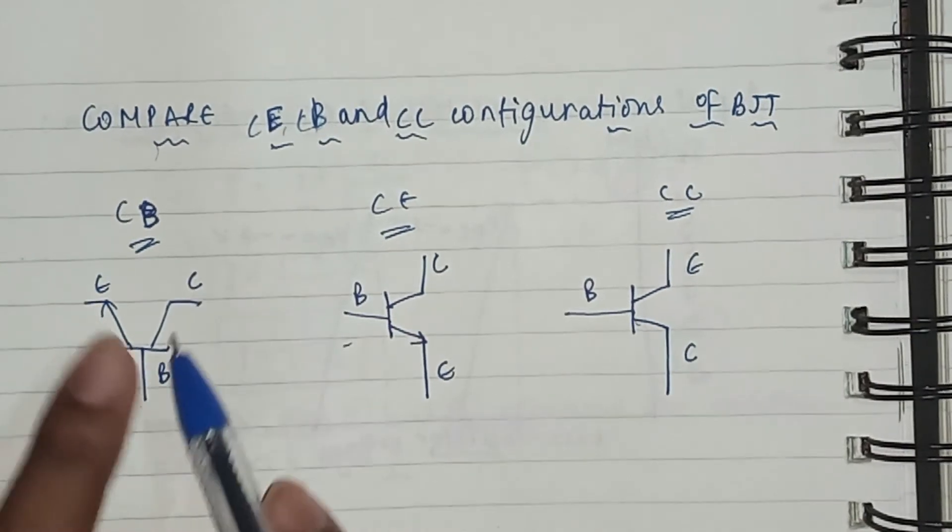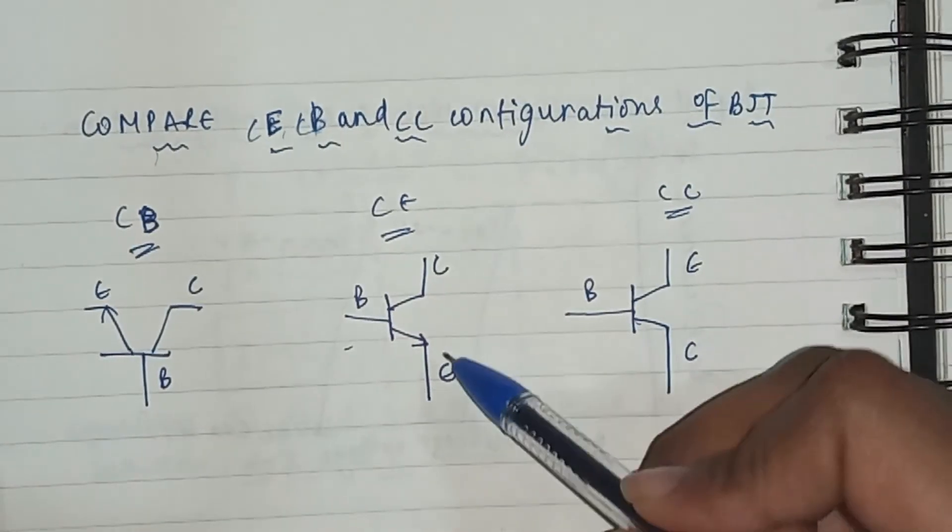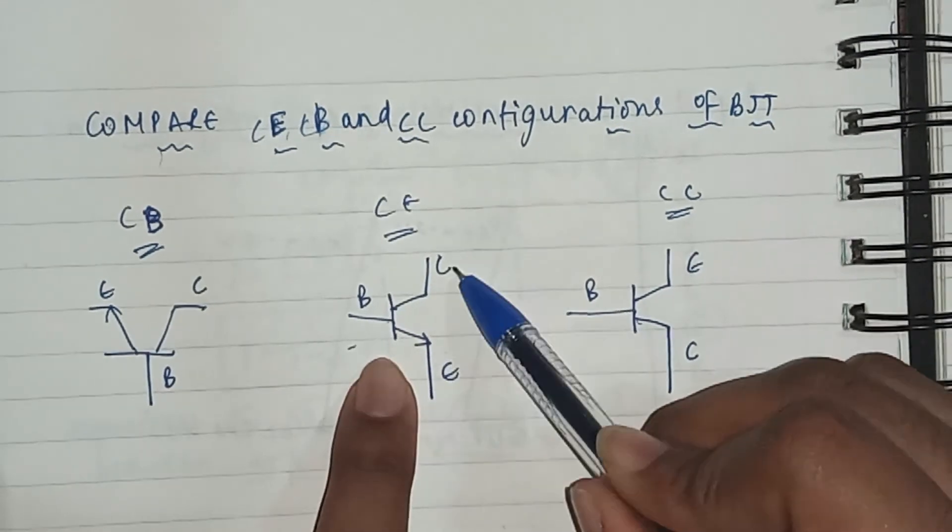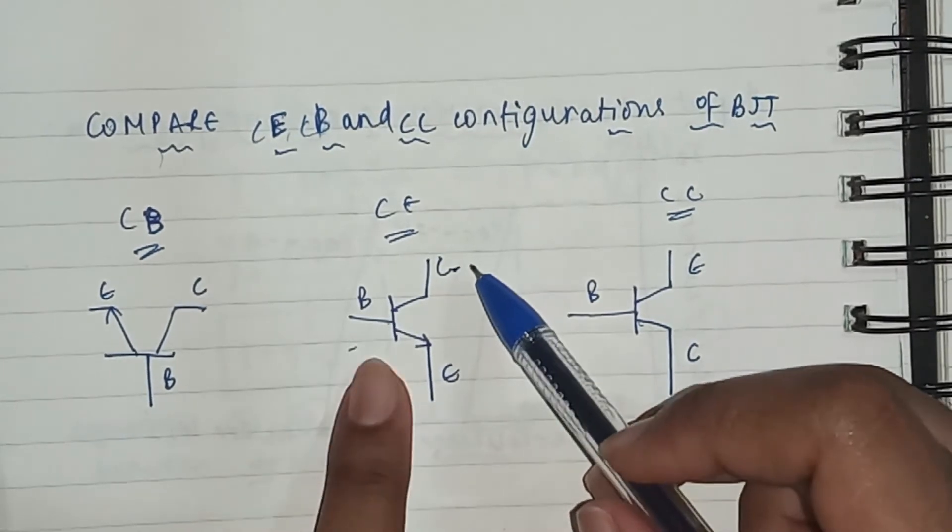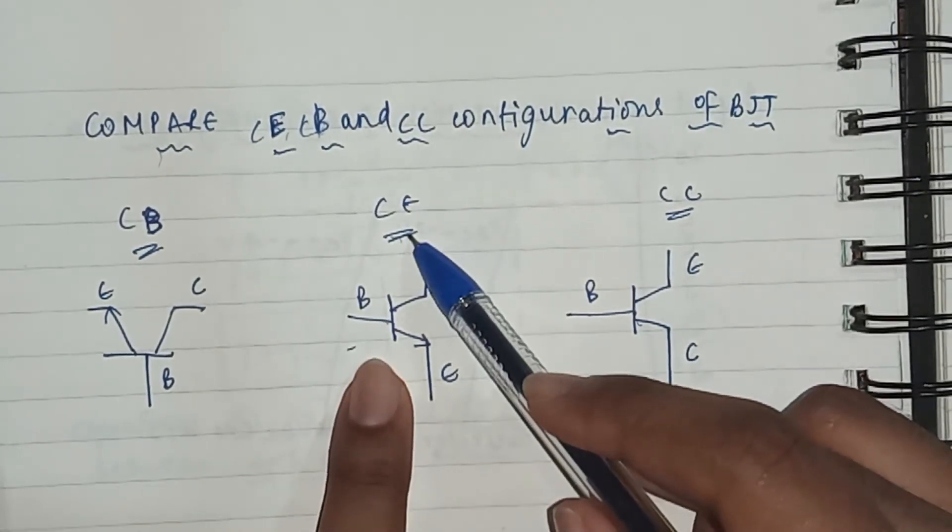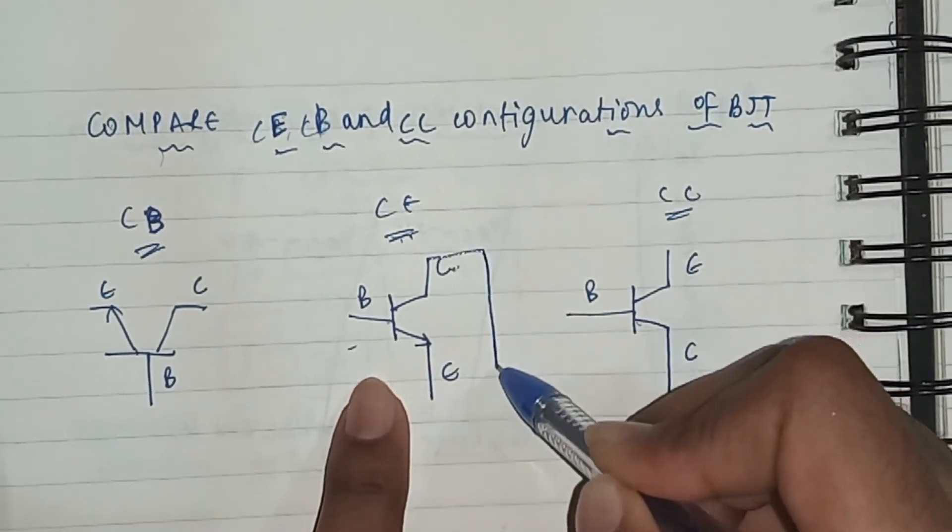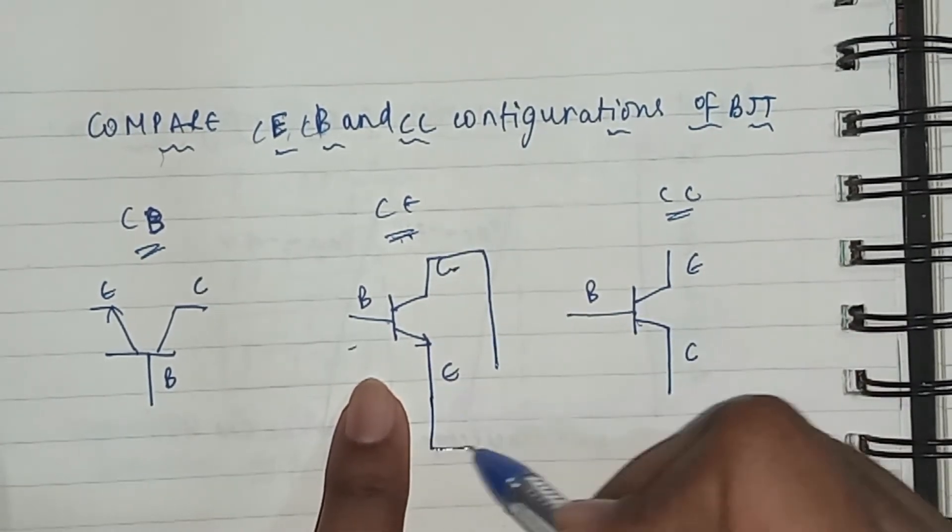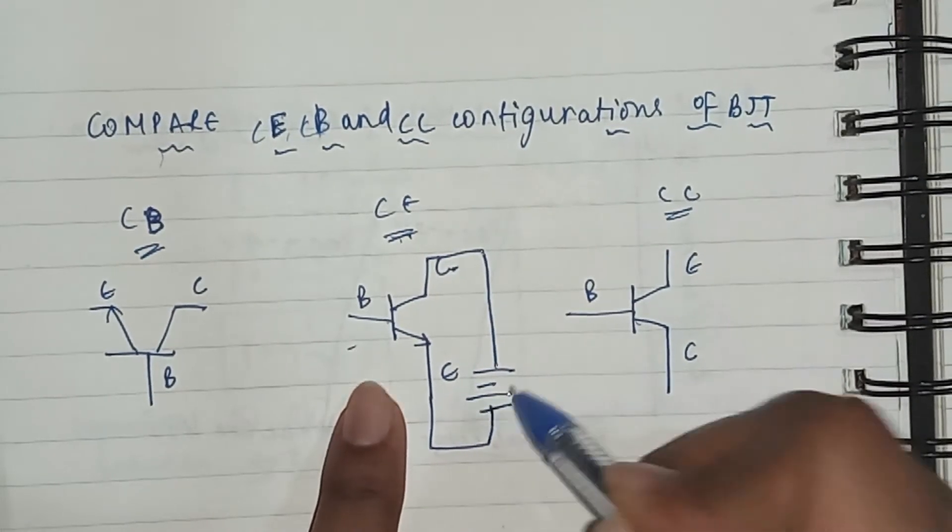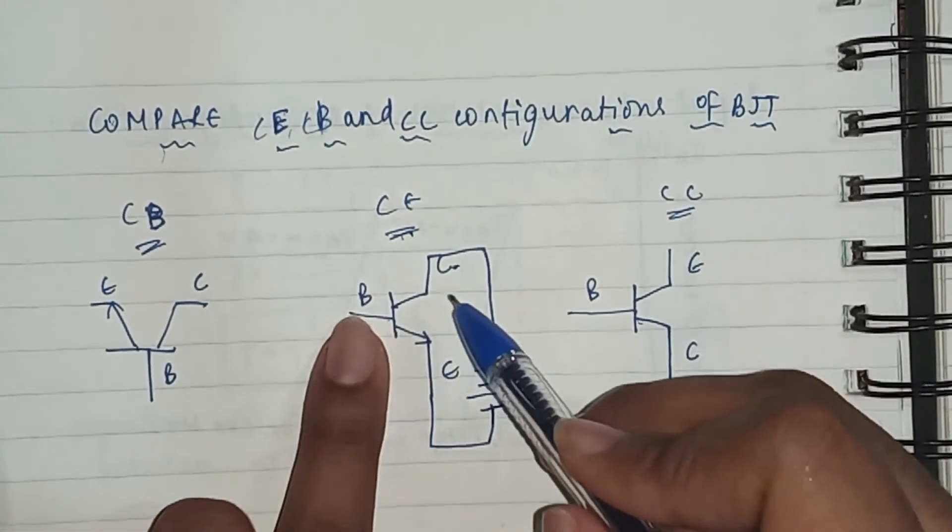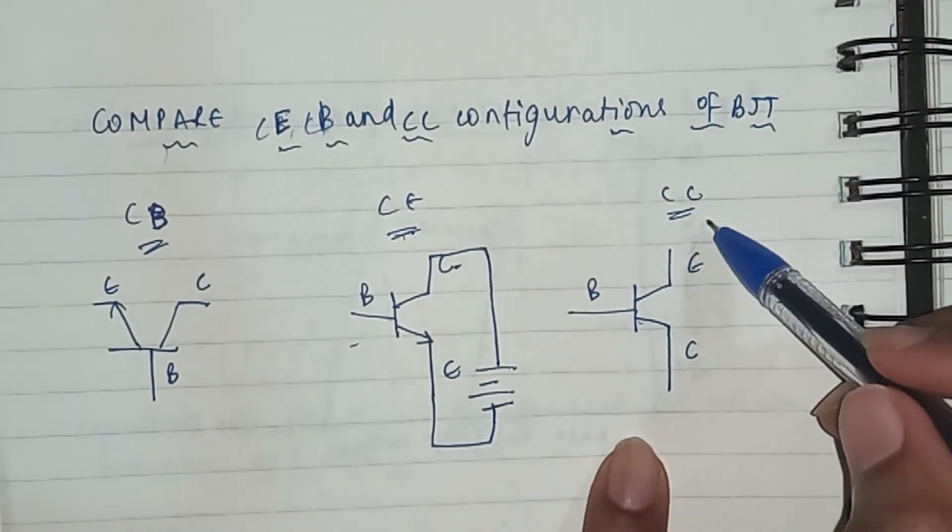When moving to the CE configuration, we have the emitter in common to the base and collector. We will have VCC here. So emitter is common to both base and collector, and in the same way, in the CC configuration we have collector common to both base and emitter.